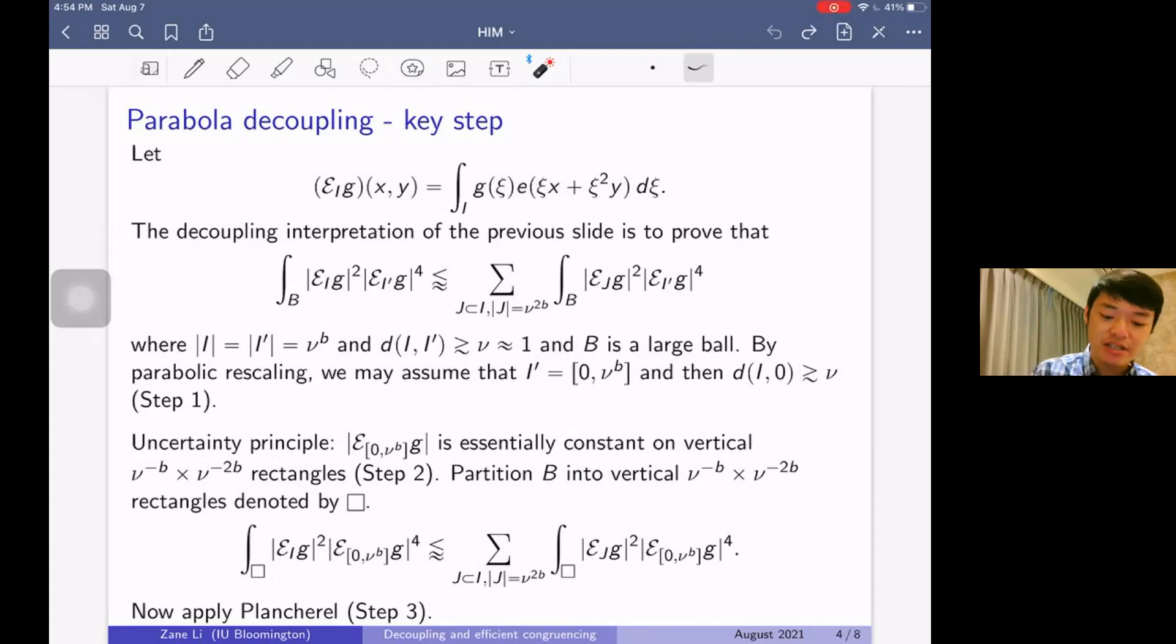So here we're going to have the extension operator be defined as follows. You should think of this as sort of the harmonic analysis version of an exponential sum that is considered in the Vinogradov mean value theorem. So this is an integral over I. Maybe we're summing over some residue class of a certain length. And the decoupling interpretation of the previous slide is to prove the following estimate.